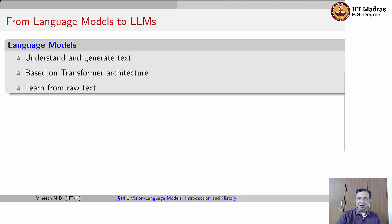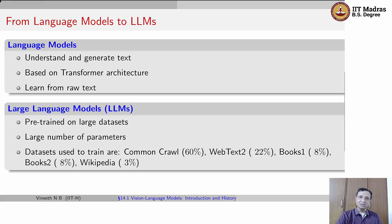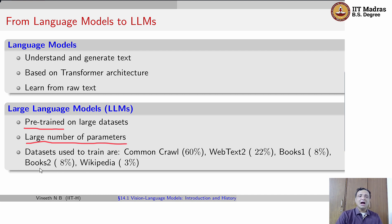Language models began with the objective to understand and generate text, largely based on the transformer architecture in the last few years, learning from raw text. These have morphed into Large Language Models, or LLMs, where the key differences are pre-training on very large datasets with a very large number of parameters — on the order of billions or hundreds of billions. The datasets used include web-based text datasets such as Common Crawl, WebText2, Books1, Books2, and Wikipedia, with Common Crawl being the most commonly used across different models.